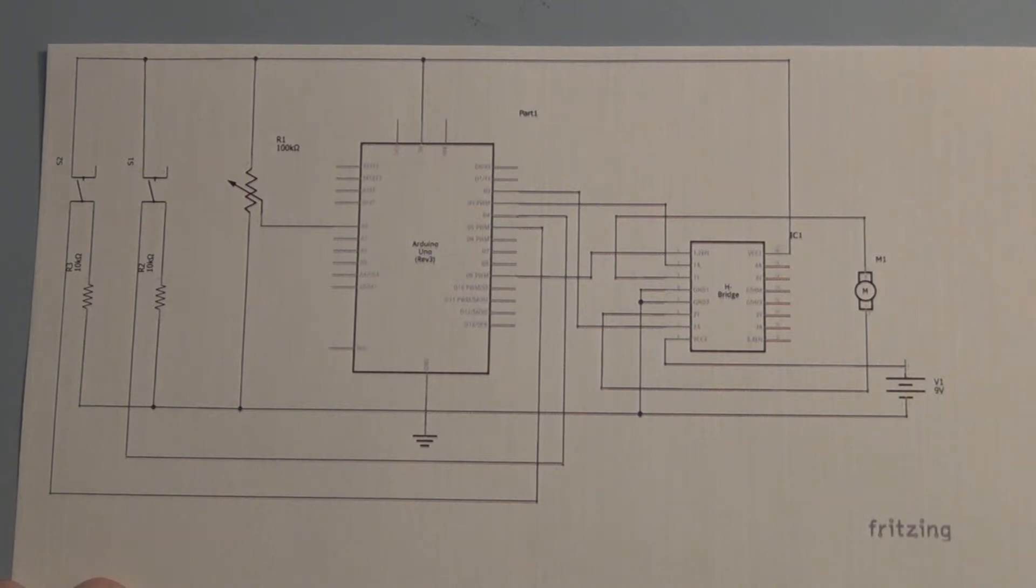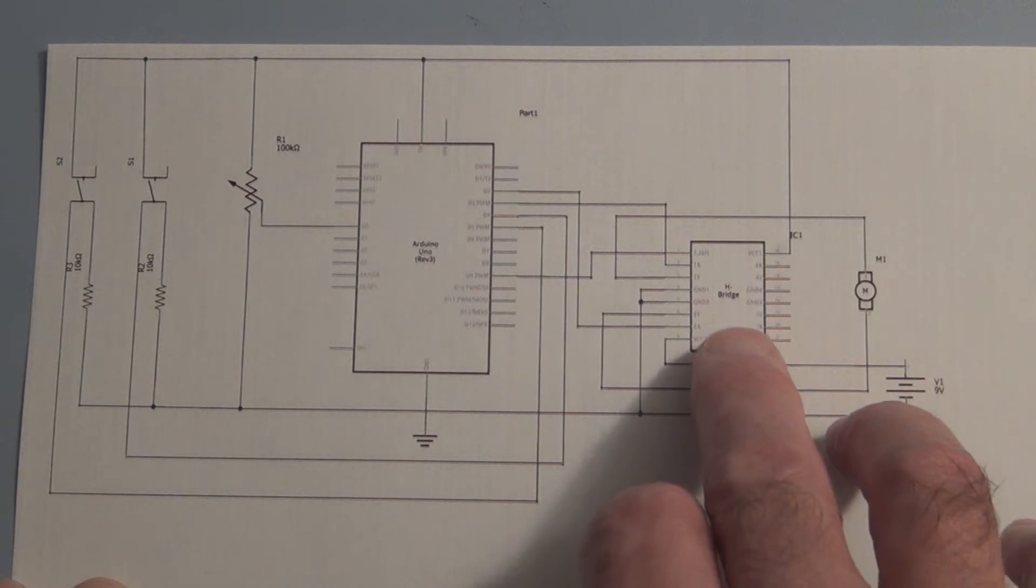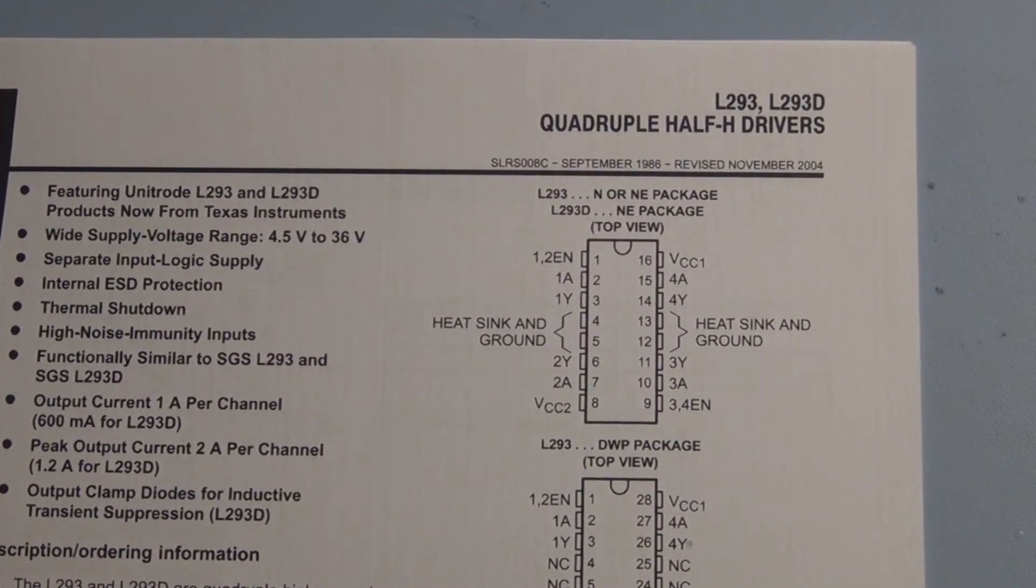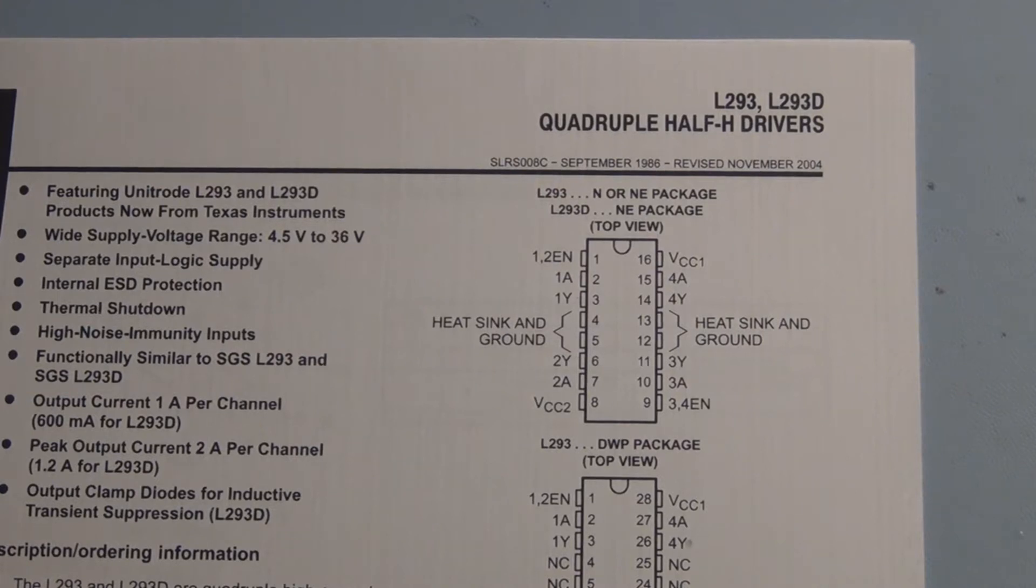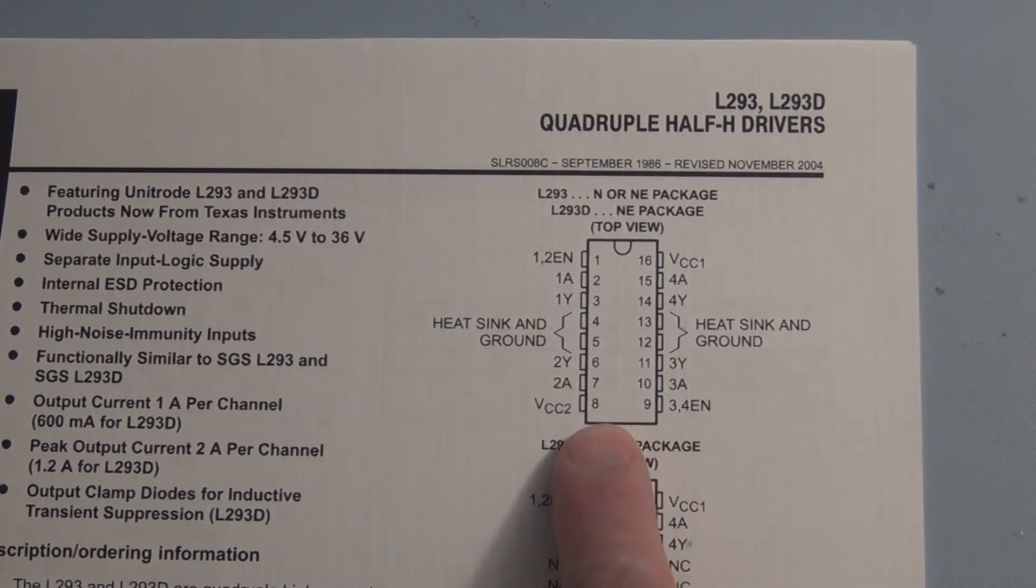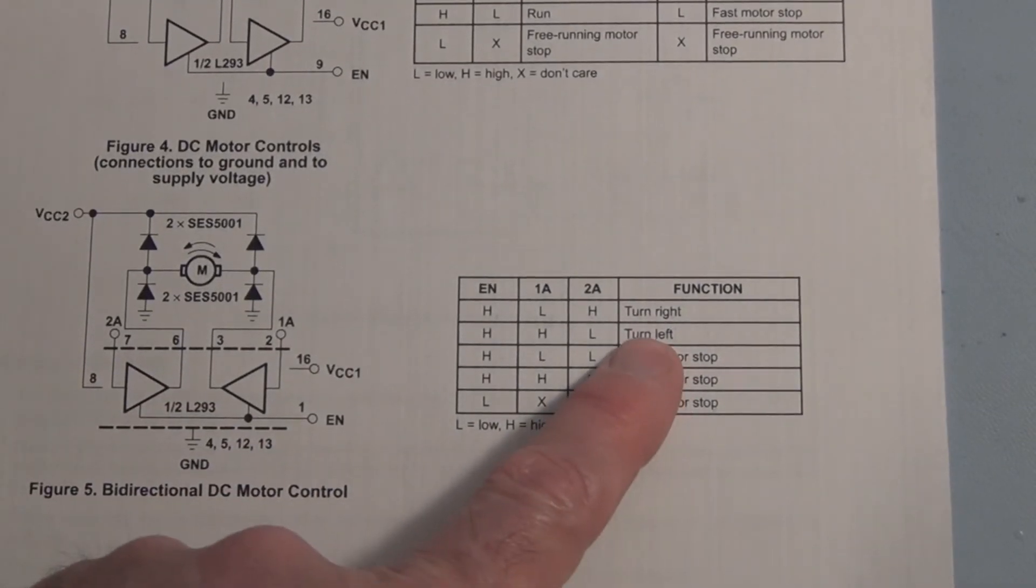But besides the microcontroller, the major component that's going to give us the ability to change direction and turn the motor on and off and also help us with variable speed is this H-bridge. Here's the datasheet for it. And you can see here it's an L293D. It's a quadruple high-current half-H driver. And it's designed to provide bidirectional drive currents up to 1 amp at voltages of 4.5 to 36 volts. And we've got the 18-pin DIP IC that we're using. And on the datasheet here in the back, they have the functions, sort of like a truth table.